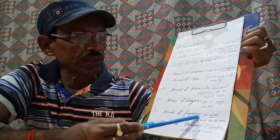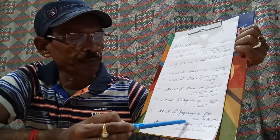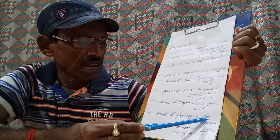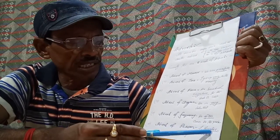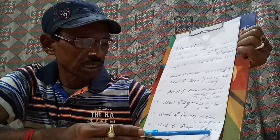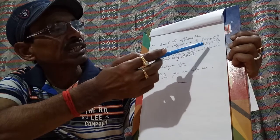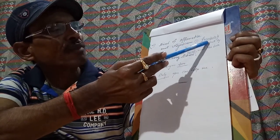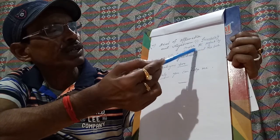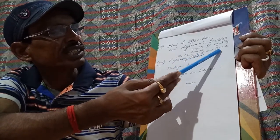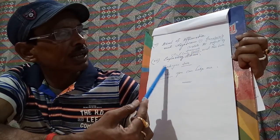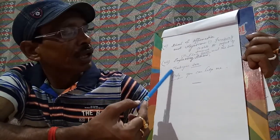Number five: adverb of frequency — 'he often comes to the park'. Number six: adverb of reason — 'I therefore do not go to school'. Number seven: adverb of affirmation and negation — affirmation example: 'I will certainly complete the project by tomorrow'; negation example: 'I have never read this book'.